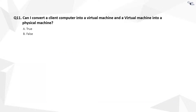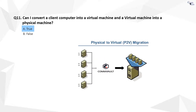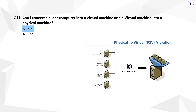Question 11. The correct answer is A and C. You can convert a physical machine into a virtual machine, and convert a virtual machine into a physical machine, using the one-touch backup data.